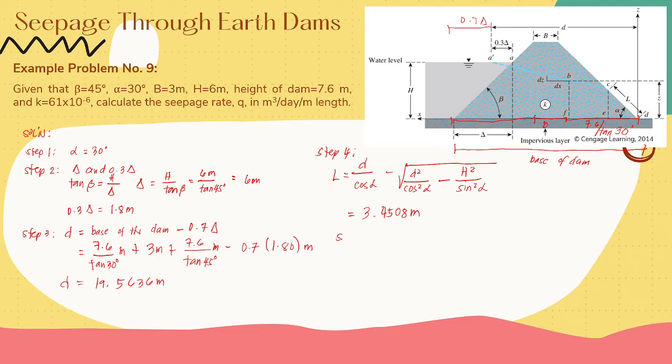For step 5, q is equal to k, the hydraulic conductivity, times tangent alpha times L times sine alpha. Substituting k as 61 times 10 raised to negative 6, alpha as 30 degrees, and L as 3.4508 meters, we can get 6.0766 times 10 raised to negative 5 cubic meter per day.